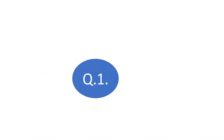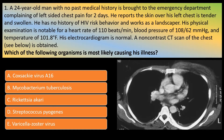Question number 1. A 24-year-old man with no past medical history is brought to the emergency department complaining of left-sided chest pain for 2 days. He reports that skin over his left chest is tender and swollen. He has no history of HIV risk behavior and works as a landscaper. Physical examination is notable for a heart rate of 110 beats per minute, blood pressure of 108 over 62 mmHg, and temperature of 101.8 degrees Fahrenheit. His ECG is normal.